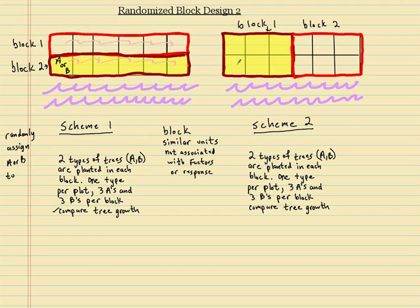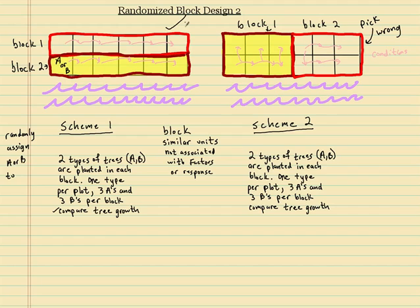A lot of people pick the wrong one — scheme two — but that's wrong. This is the correct choice: scheme one. The reason why is because if you look at the bottom block, everybody in that block is similar to each other — everybody is next to the water.